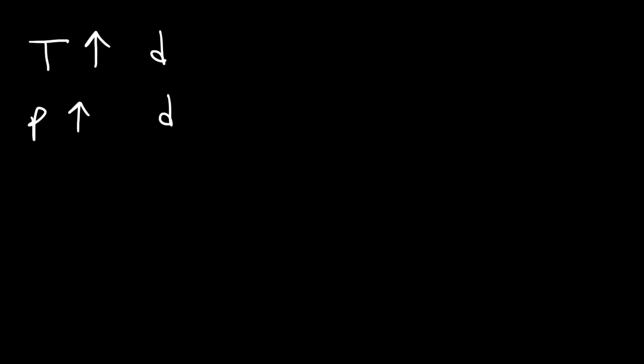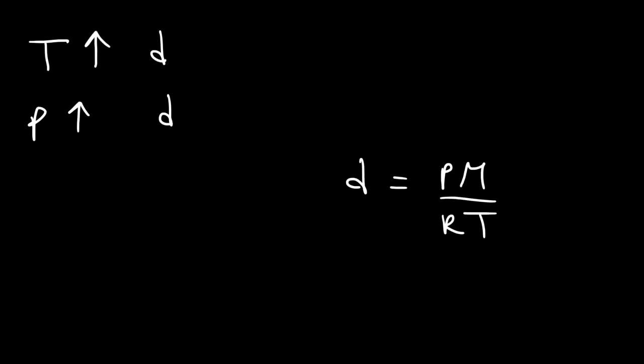Now what happens to the density of the gas if the temperature is increased? What about if the pressure is increased? Looking at the formula, D is equal to PM over RT. Because pressure is in the numerator, pressure and density are directly related — if you increase the pressure of a gas, the density will increase. The temperature is on the bottom, so it's inversely related to the density. If you increase the temperature, the density will decrease. And if you choose a substance with a higher molar mass, the density will go up as well.